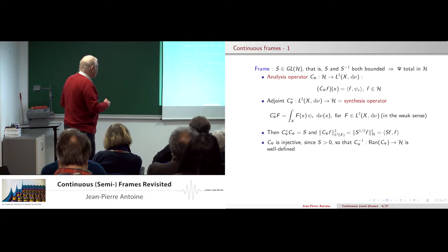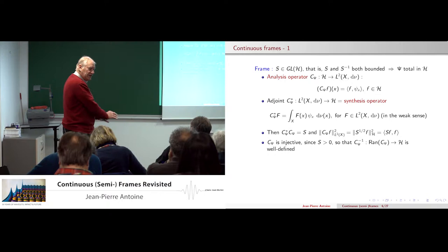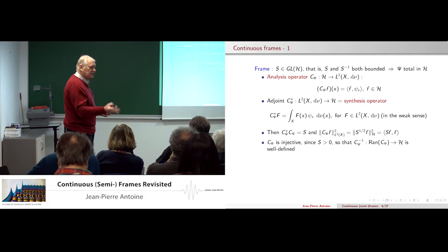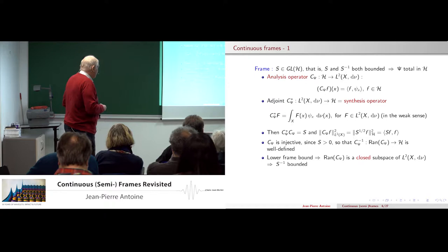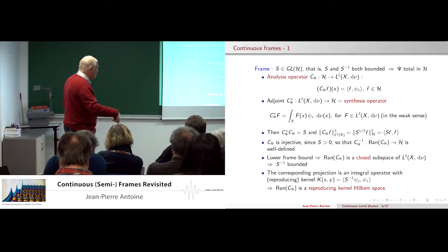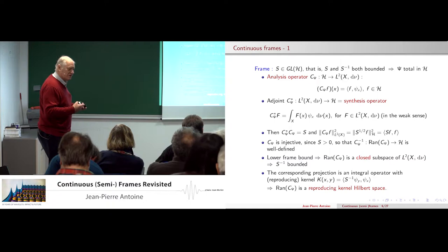C is injective by this condition, so you have the inverse well defined from the range of C into H. We have two columns: on the left hand side H, the abstract Hilbert space, and on the right L2 of X. You switch back and forth. The range of C is a closed subspace, which means S minus one is in fact bounded. The corresponding projection — because the projection onto a closed subspace is an integral operator — means the range is a reproducing kernel Hilbert space. That gives you a lot more structure and very nice regularity properties, interesting for interpolation for instance.